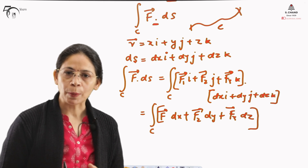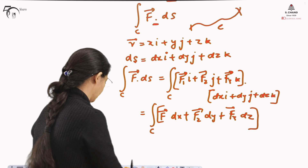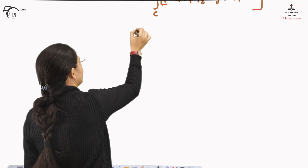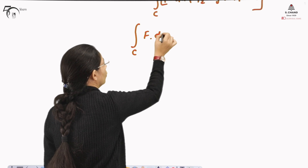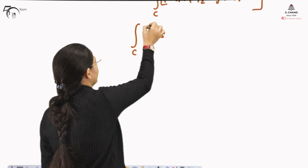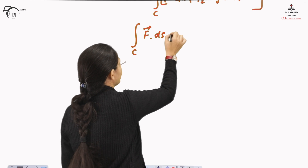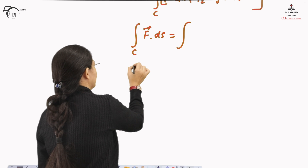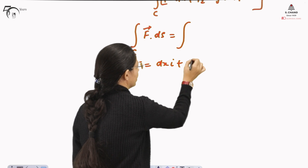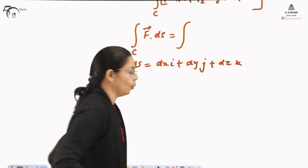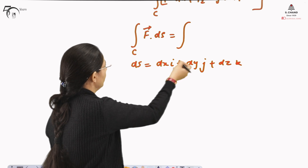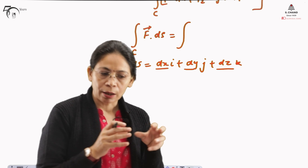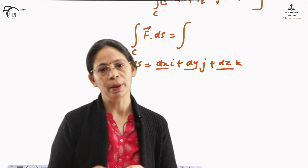Another way is to evaluate this using the parametric form, which we also used for the scalar valued function. To evaluate using parametric form, we write the integral over C of F dot dS. The terms dX, dY, dZ will be written in terms of parameter T, and the function F in all three directions i, j, and k will also be written in terms of T.